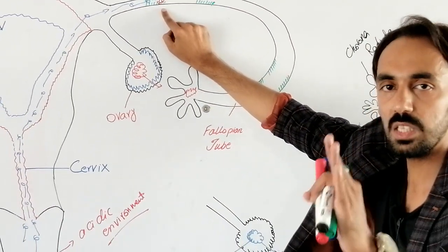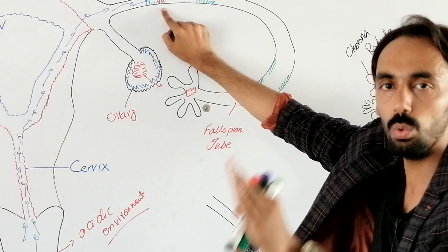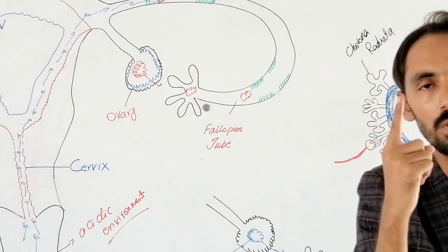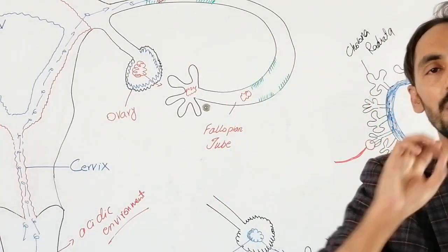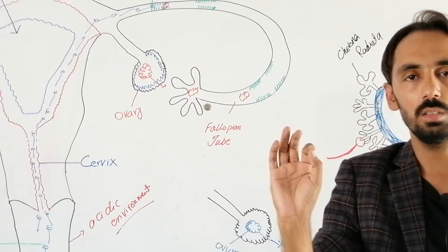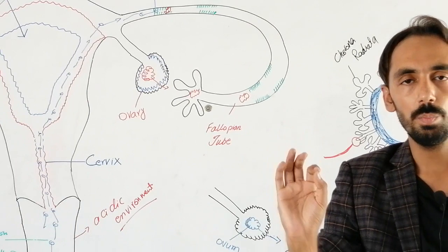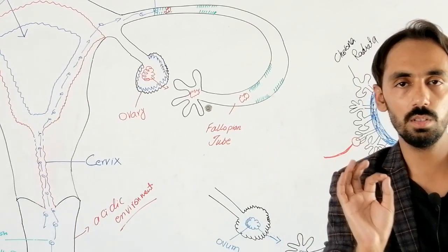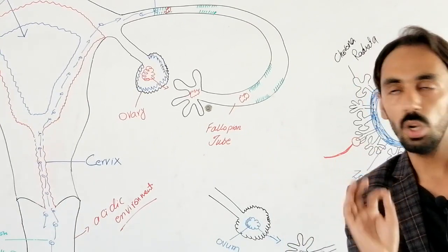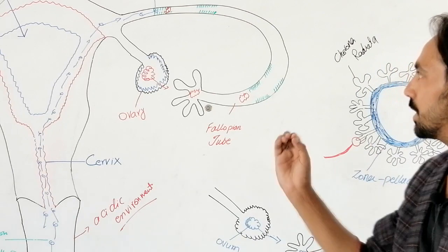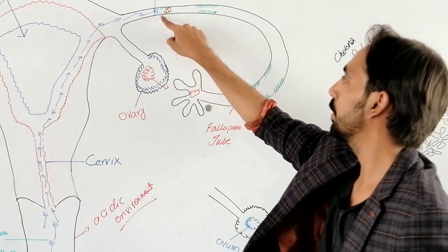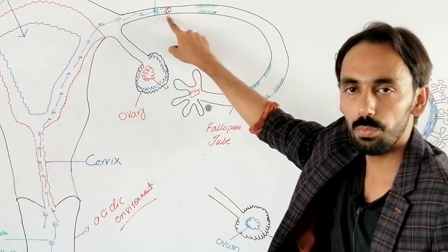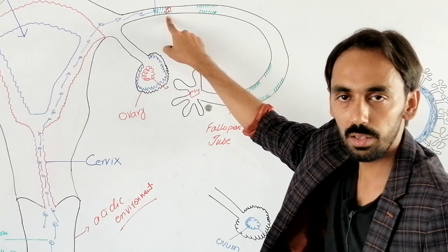Out of these 150 or 200 sperms, only one sperm — the fittest one — will fertilize this unfertilized egg, because as you know, survival is only for the fittest. This is the rule. So the fittest sperm, only one, will fertilize the unfertilized egg.